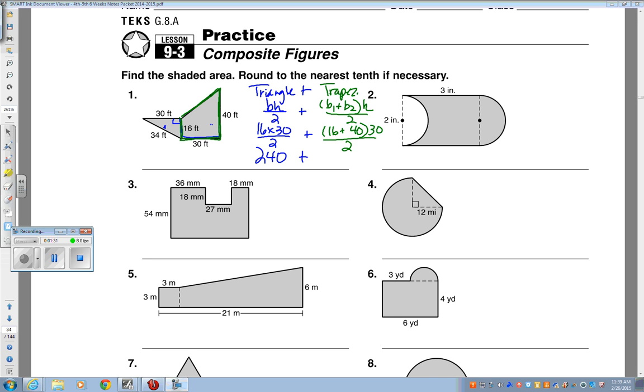So, to do the trapezoid, don't you have to add the bases first together? Okay, so if I add those together, that would give me 56, right? And then I'm gonna times it by the 30, and then I'm gonna divide by 2. So, what is that gonna give me? Yeah, you should get 840. Alright, so we're gonna add the 840 to the 240. Yeah, 1080. That is my feet squared.